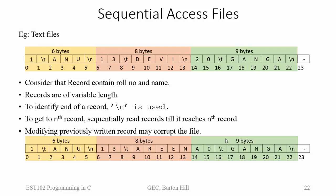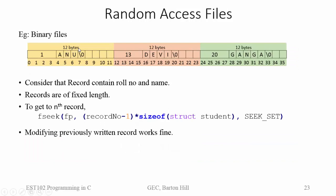The next one is random access files. In the case of random access files, we usually use types like structures. Here I have used a structure called student, and consider that it is of size 12 bytes: 4 bytes for the role number and 8 bytes for the name. Usually the size of name would be like 32 bytes, but for simplicity I have reduced the size. Each record will have 12 bytes — role number and name — and each record is of fixed length, that is 12 bytes.